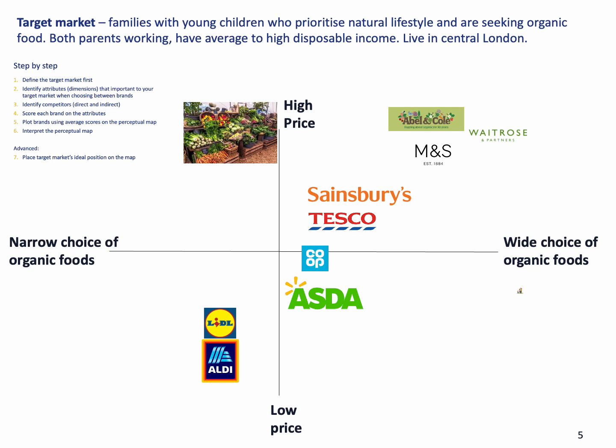Now we can interpret the map. You can see that it's quite crowded, with lots of players in the market. If you're going after families who prioritize a natural lifestyle and want a wide choice of organic foods, Waitrose can emphasize in their positioning materials that they have perhaps the widest selection of organic foods, or highlight fair prices — it's their philosophy to say they use honest pricing. Abel & Cole can advertise how much organic food they have, and if the price is a bit higher, they can keep quieter about price but emphasize the wide choice. Other supermarkets have opportunities to enter more — for example, Lidl and Aldi can expand their organic food selection if that's the market they would like to pursue.